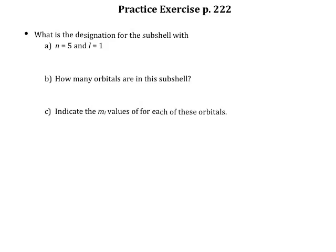This first question asks us for the sub-shell with n equals 5 and l equals 1. You should remember that the n number tells us the energy level, so we know we are in the fifth energy level. L equals 1 tells us what type of orbital we have, or the shape. Since we know we are in the fifth energy level, that means it's going to be a 5-something, and when l equals 1, we're always talking about p orbitals. So this is going to be a 5p orbital.